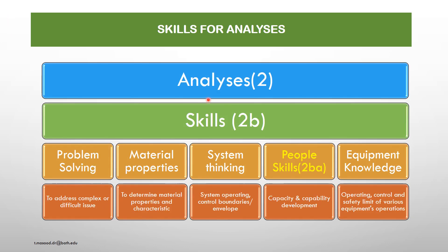Skills for analysis — Level 2. The skills are constituted into five segments: problem solving — to address complex or difficult issues with a degree of precision; material properties — to determine material properties and characteristics; system thinking — system operating control boundaries and their operating envelopes; people skills — capacity and capability development; equipment knowledge — operating control and safety limits of various equipment and operations. These five skills must be accomplished to perform a complete analysis for the optimization process.